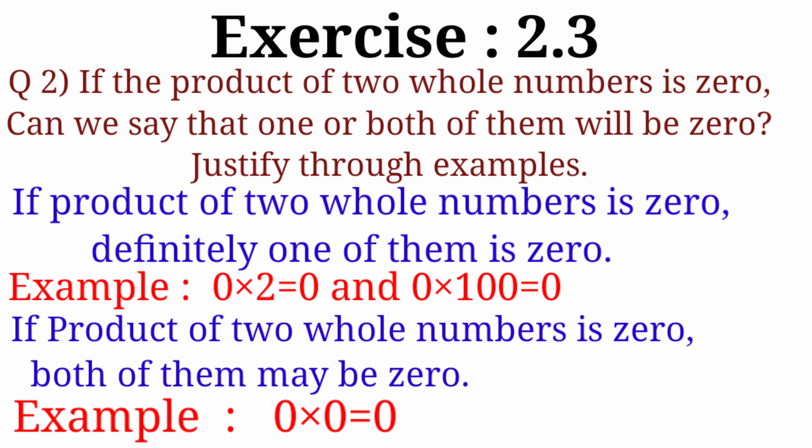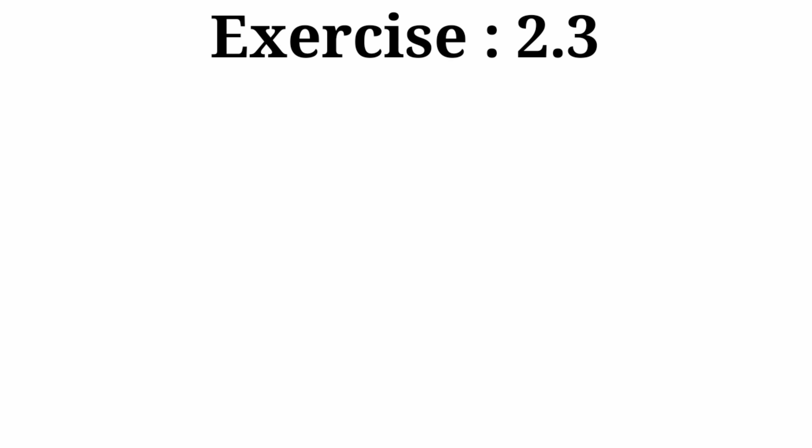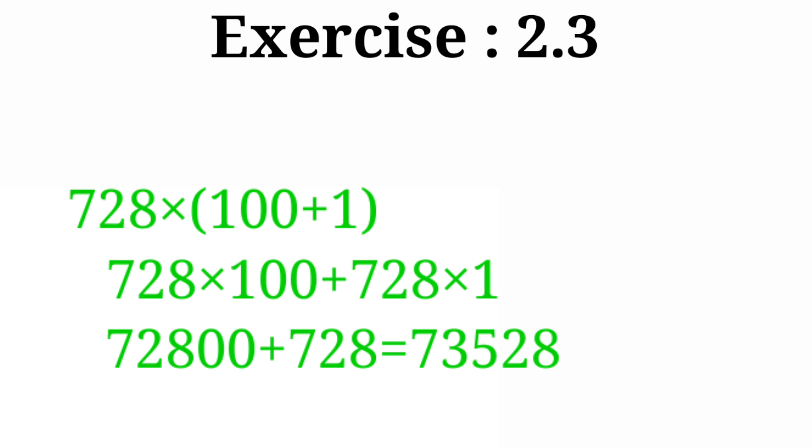Now the last question of this exercise — it's very similar to what we already did in exercise 2.2. We need to find the answer using the distributive property. I hope you understand this property, but I'm going to recapitulate it for you again. In this question we have five parts. Let's take the first part: 728 into 101.